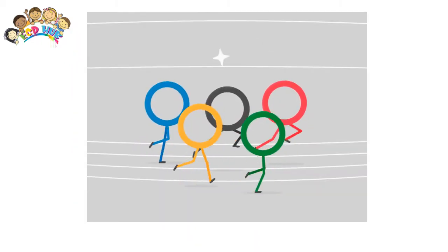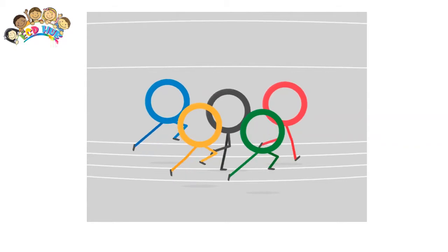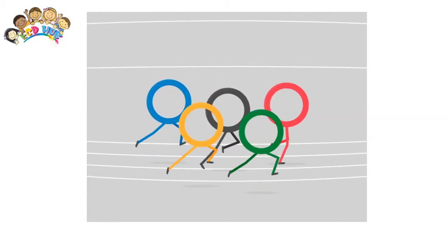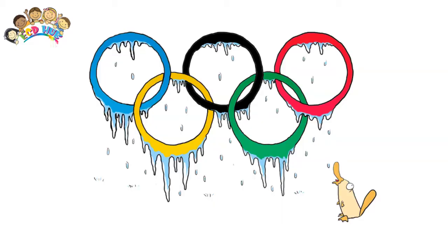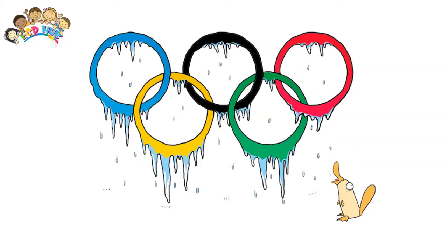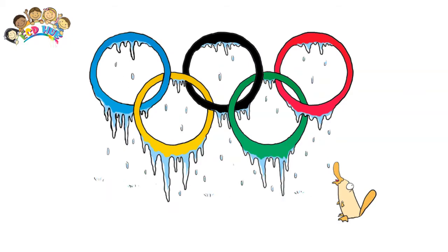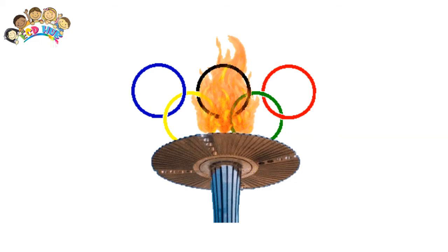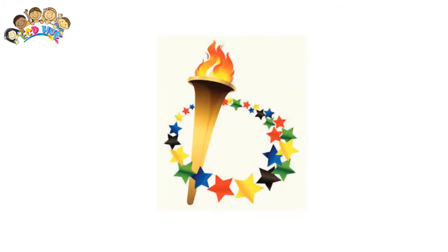People choose to play in the Olympics to represent the country they are from. The celebration of the Games includes many rituals and symbols, such as the Olympic flag and torch, as well as the opening and closing ceremonies.